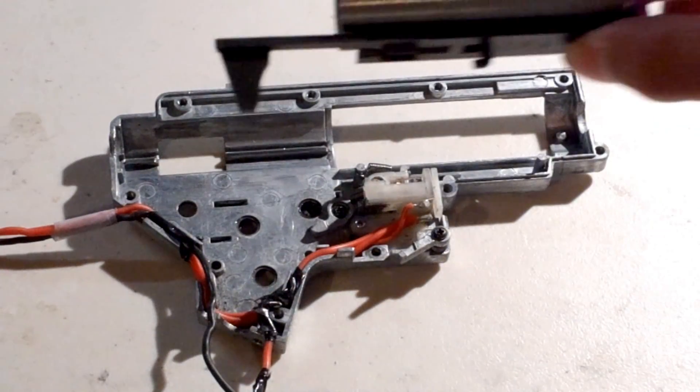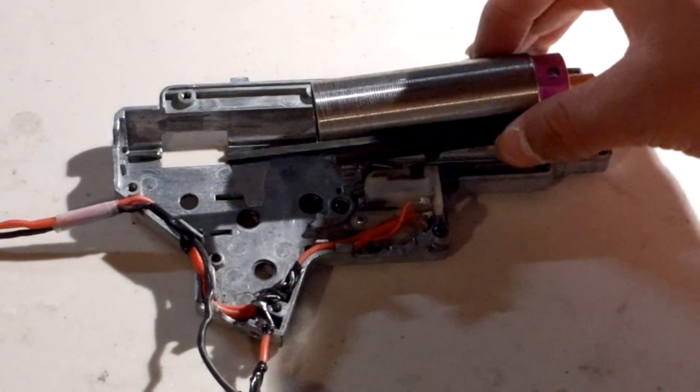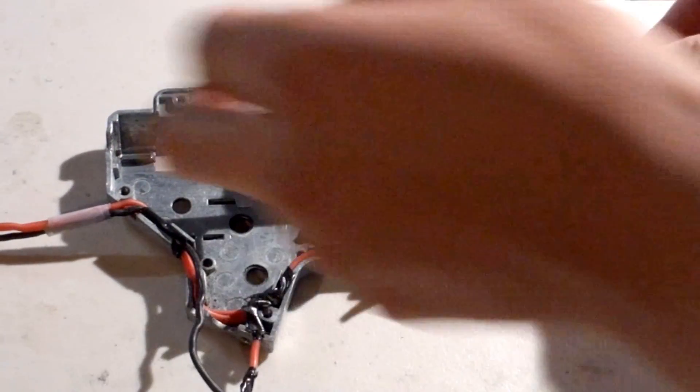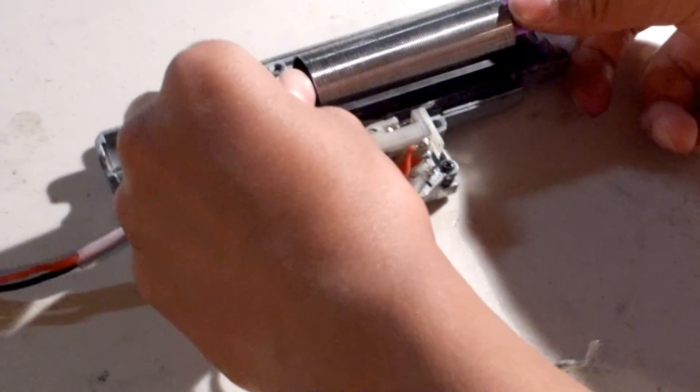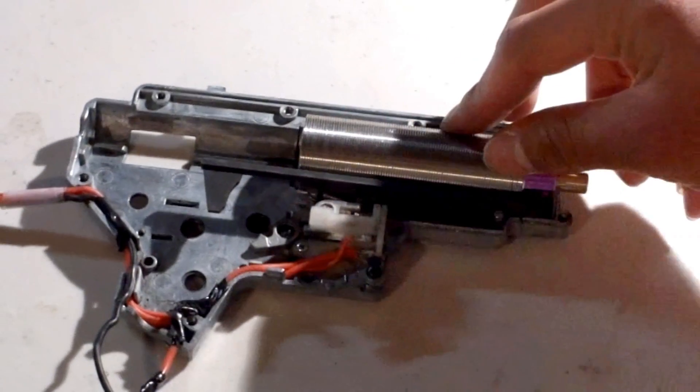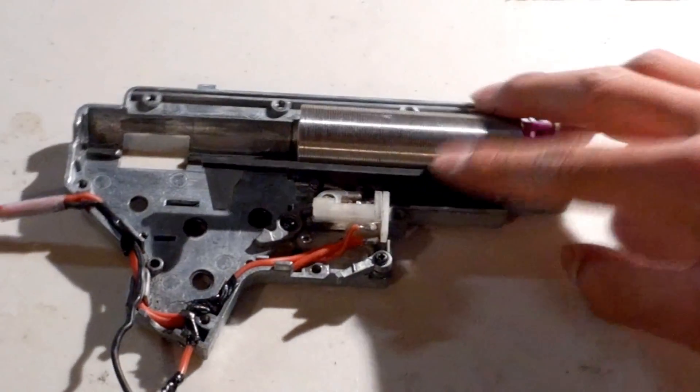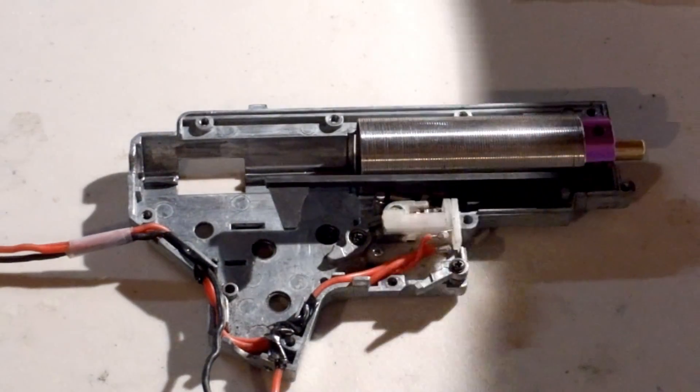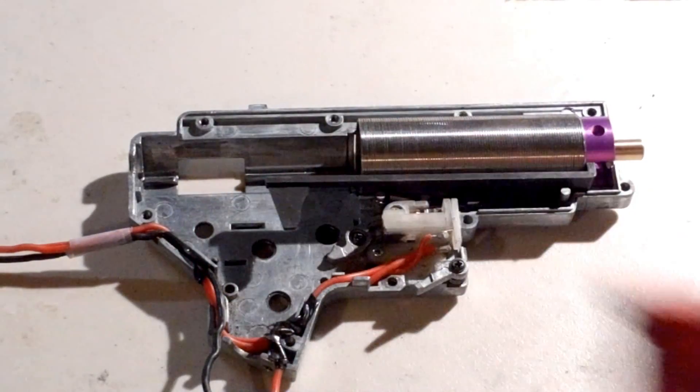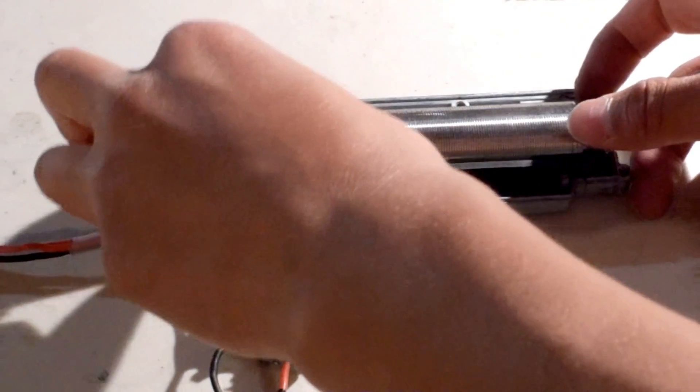Now you can put the cylinder assembly inside your gun by simply pressing down. Next, you can take your piston and put it in the cylinder.